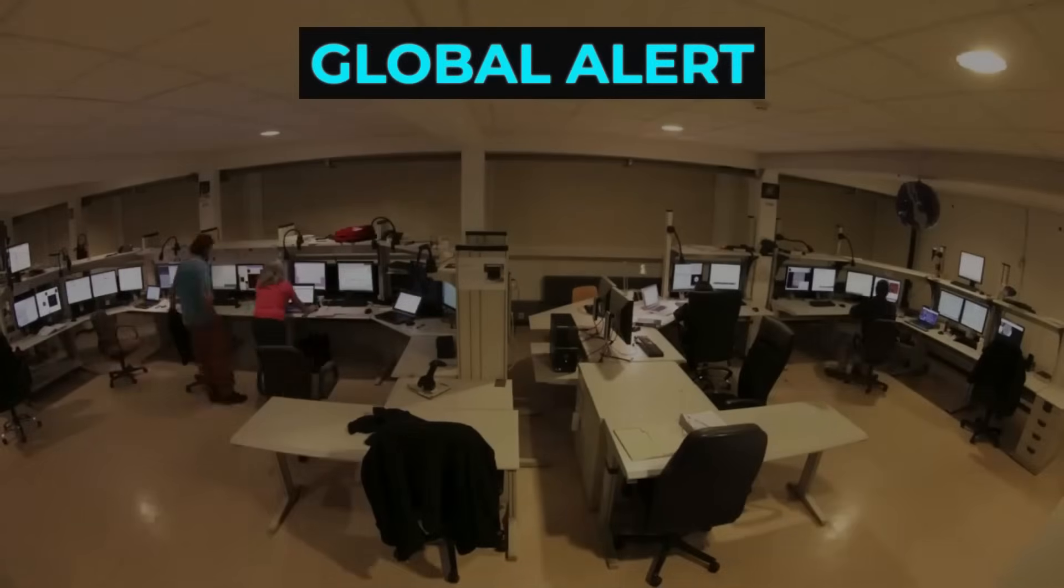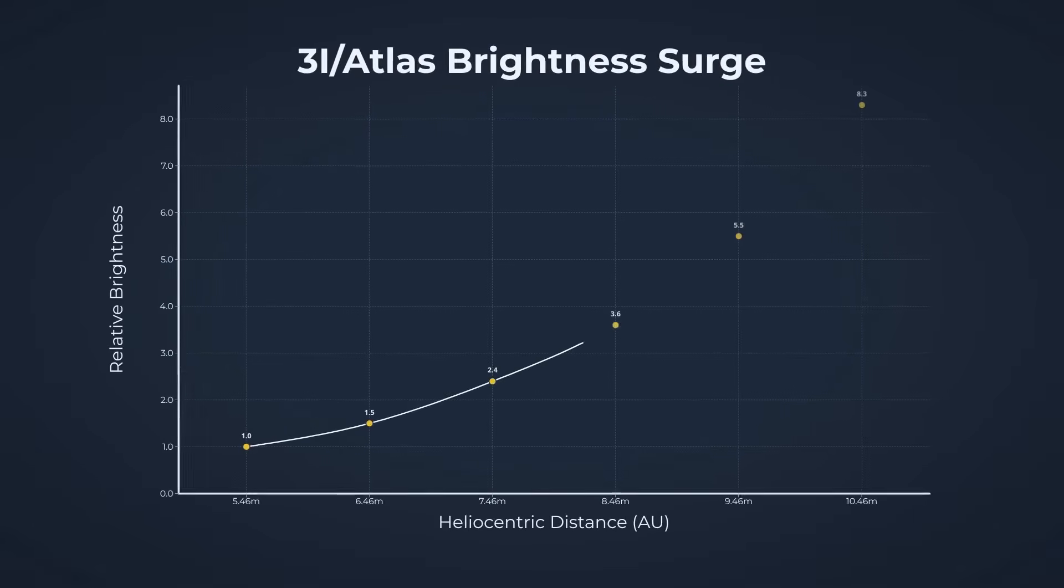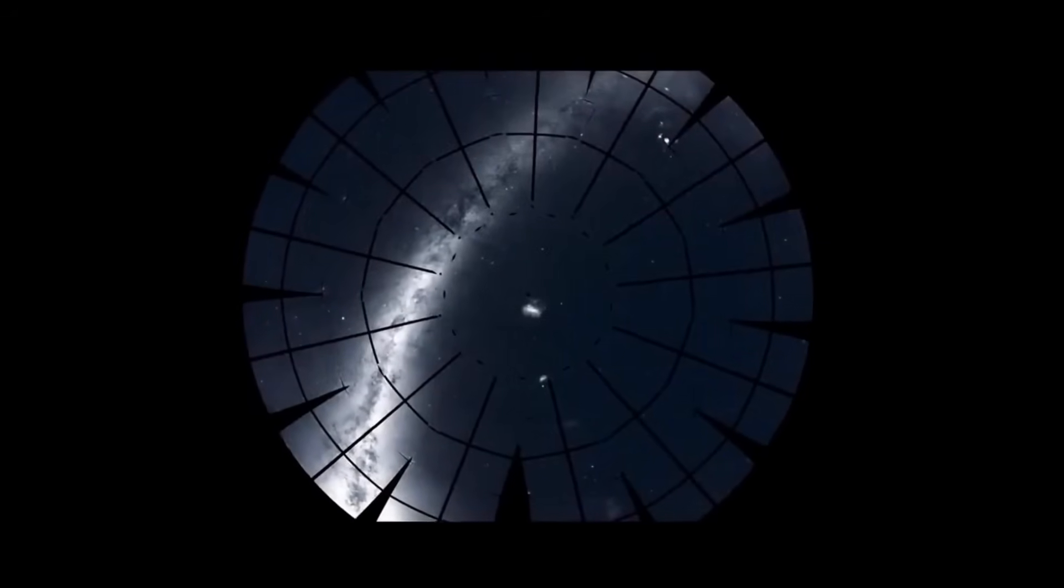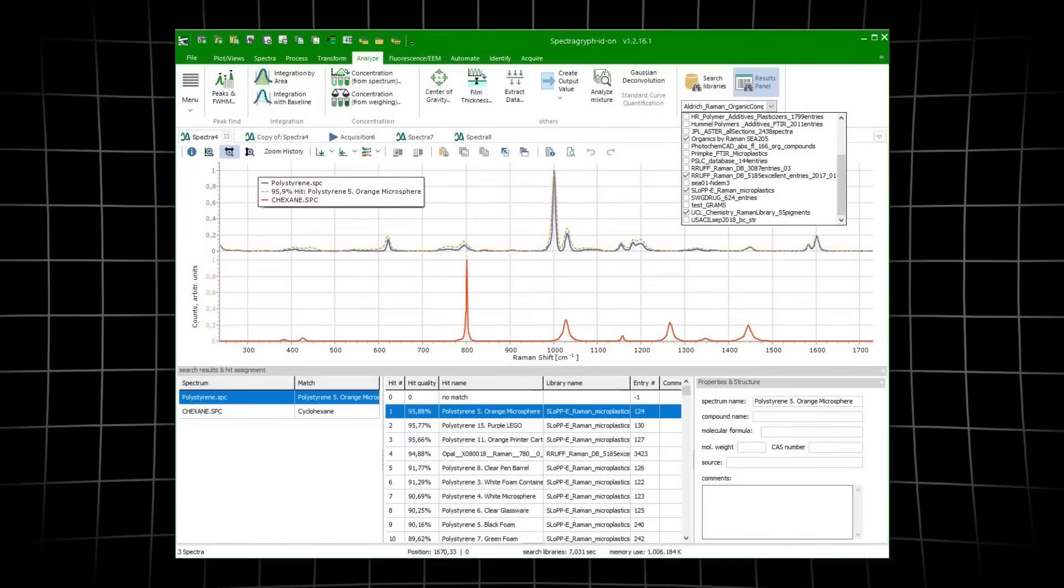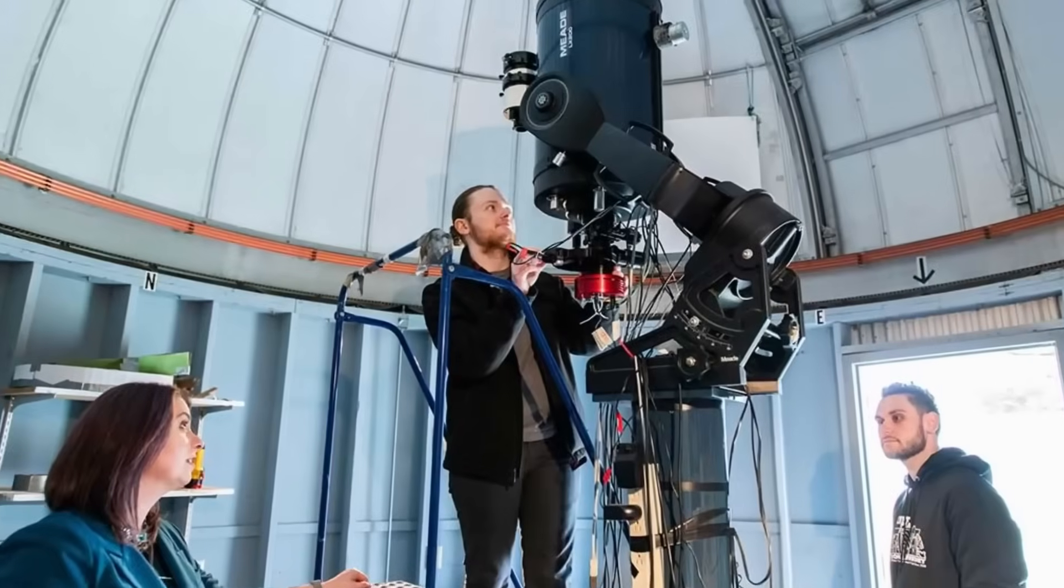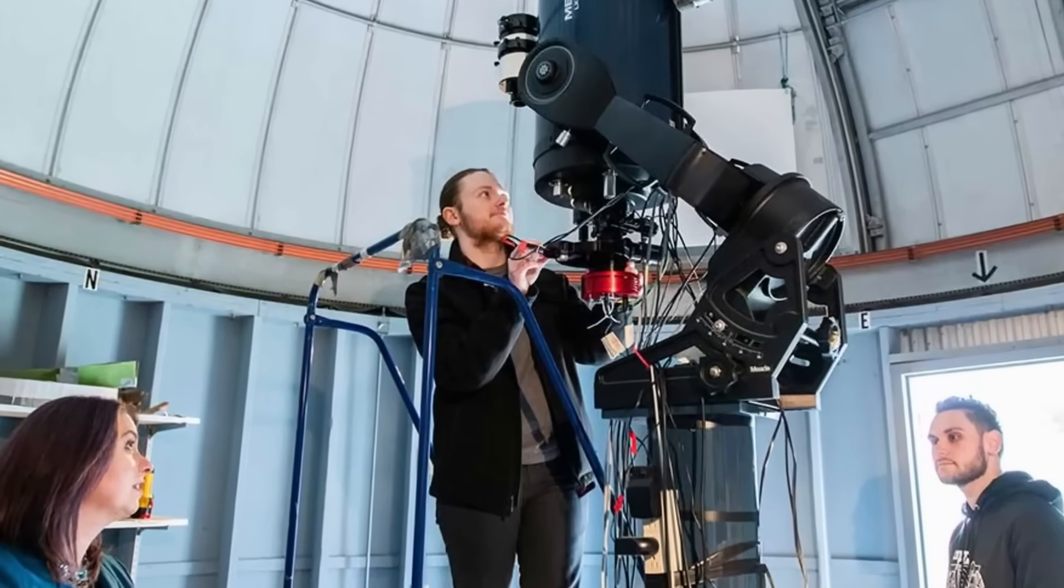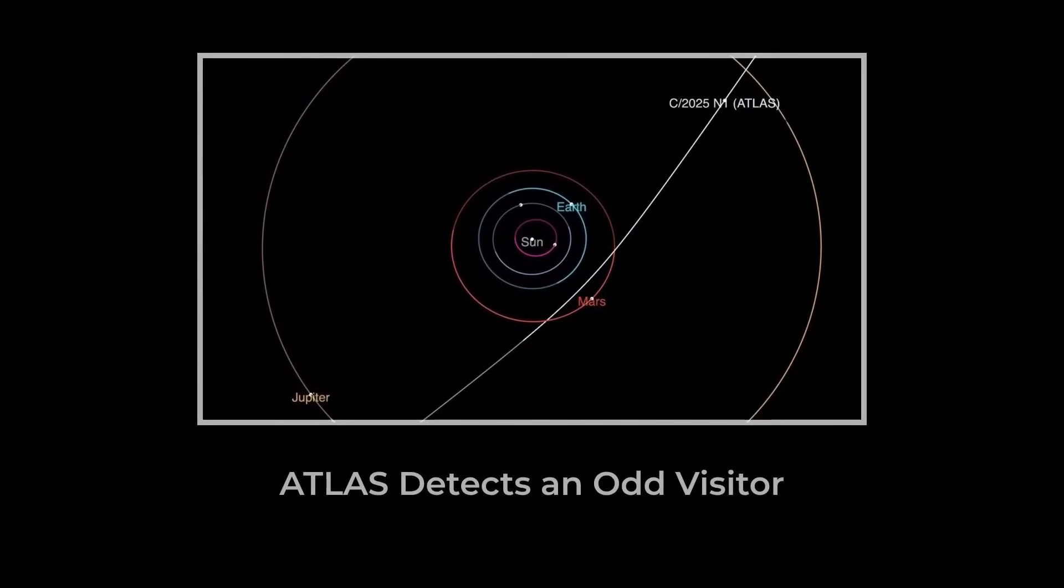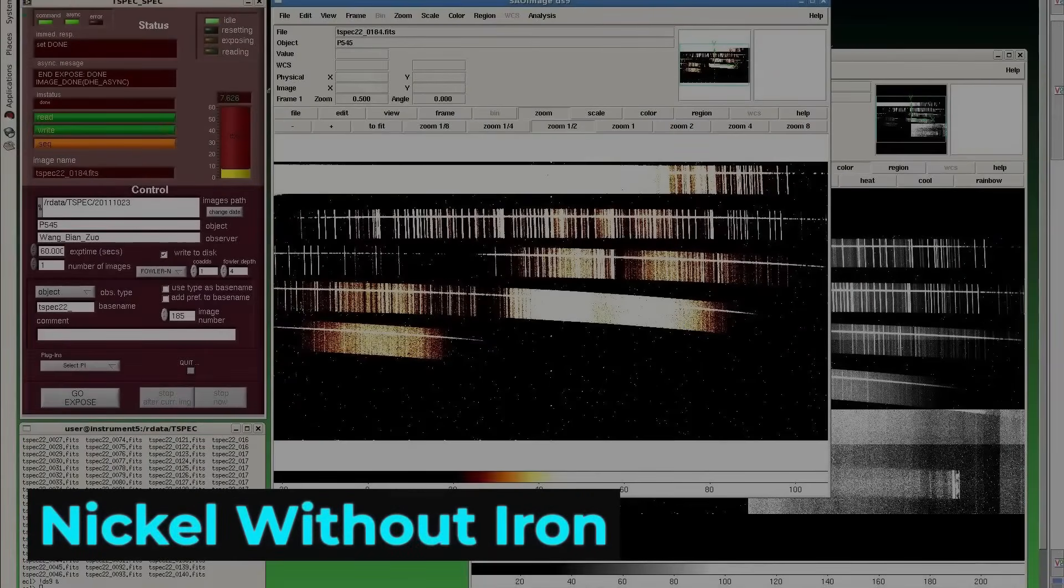One of the strangest things about 3i Atlas is the way it moves. Comets normally act like natural rockets. As the sun warms their icy surfaces, jets of vapor shoot into space, pushing the nucleus slightly off course. Astronomers call this the non-gravitational acceleration, and it's measurable in every active comet we've ever tracked. But Atlas refuses to follow this rule. Even though it has a visible coma and a tail stretching hundreds of thousands of kilometers, its orbit hardly changes at all.